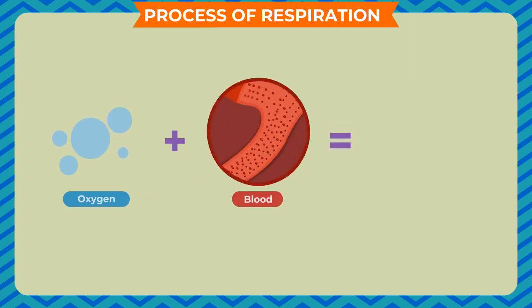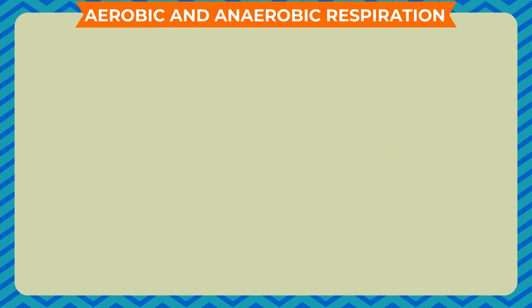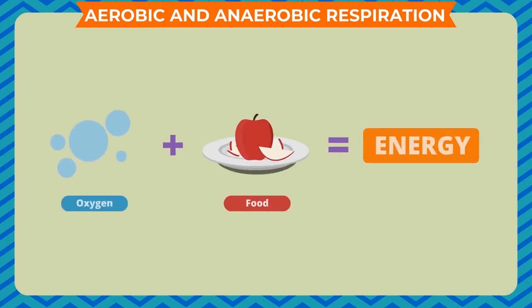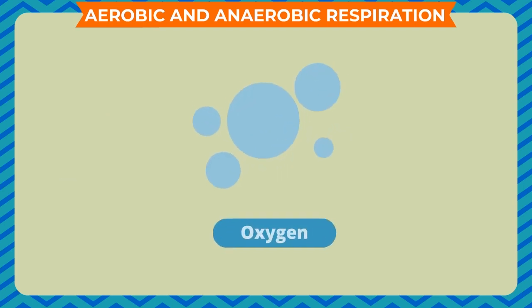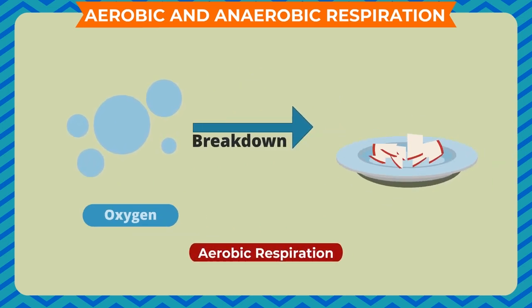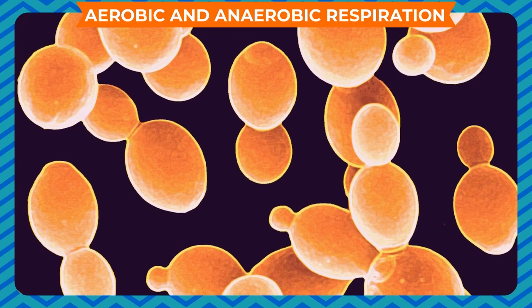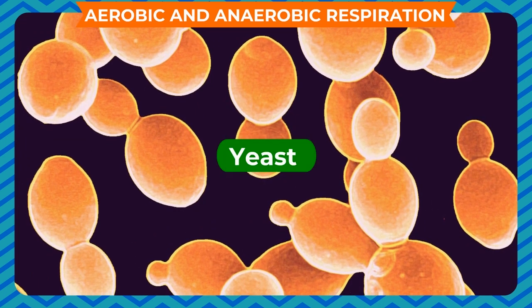The process of taking oxygen into the cell and using it for energy release leads to two types: aerobic and anaerobic respiration. The process of breaking down food with the help of oxygen to release energy is termed as respiration. However, food can also be broken down without oxygen. When oxygen is involved in breaking down food, it is called aerobic respiration. When oxygen is not involved, it is called anaerobic respiration. There are a few organisms like yeast which can survive without oxygen.